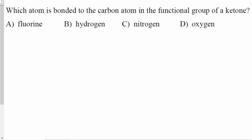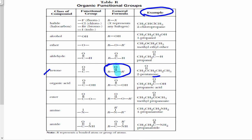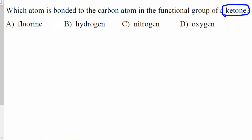The next question asks: which atom is bonded to the carbon atom in the functional group of a ketone? I would highlight 'ketone' and go to reference table R. If you look at the general formula or the functional group formula, ketone has oxygen in it. So not only does a ketone have carbon and hydrogen, it also has oxygen. Therefore, the answer to which atom is bonded to the carbon atom in the functional group of a ketone is oxygen.